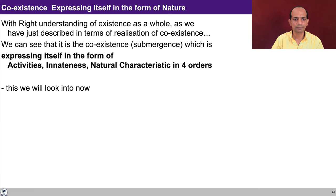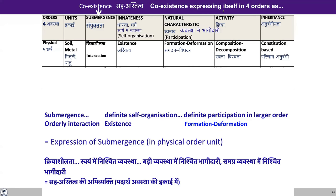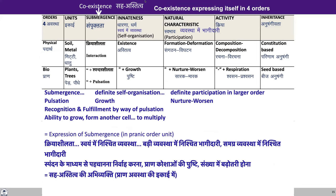We studied about this and will now recap. We studied about the submergence in the previous lecture. Now we can also observe the definite self-organization in terms of existence and the definite participation in the larger order. So every unit of the physical order interacts with other units by virtue of formation and deformation. The existence is there in every unit of the physical order, and this is all an expression of coexistence, submergence. Similarly about the bio order, as we studied in the previous lecture, there is definite self-organization and growth is visible. There is also definite participation in the larger order, and there is nurturing and worsening in the bio order. The recognition and fulfillment is by way of pulsation, and there is ability to grow from another cell — and this is all an expression of submergence.